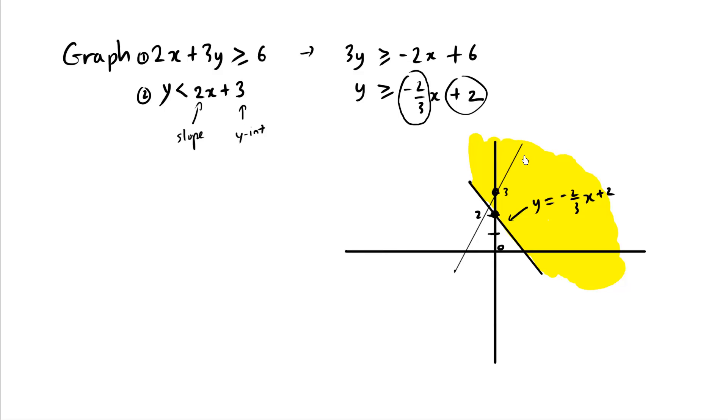Now this one here, I'm going to actually make it dashed. The reason this line is dashed is because we have a less than sign, not a less than or equal to sign. So we don't actually include the solutions on the line.